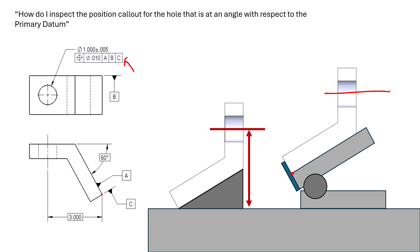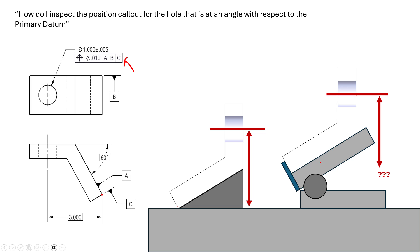We're simulating the datum reference frame being created in this feature control frame, and that's going to give us a zero-zero-zero to work with. Then we can find the location of this hole with respect to that zero-zero-zero. But you might notice one inherent flaw here — in the physical world, you can't zero your height gauge at the intersection of these two planes. If you put your probe down there it won't settle, so you have to do some trig and use a pin to offset your zero.